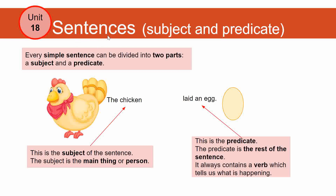The topic for today is sentences: subject and predicate. Every simple sentence can be divided into two parts, a subject and a predicate. So here we have 'The chicken laid an egg.' The chicken is the subject — the main thing or person in the sentence. 'Laid an egg' is the predicate, which is the rest of the sentence. It always contains a verb which tells us what is happening. What is the verb in this predicate?